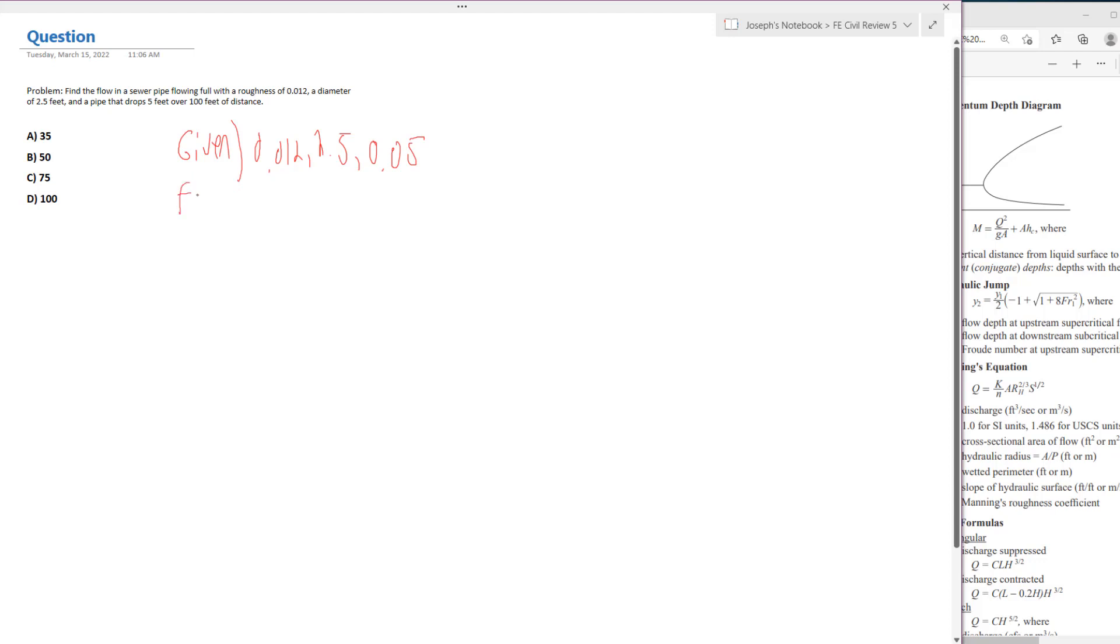Now what we need to find is the flow in the pipe. So that's going to be Q, and we don't know that. So we're going to use Manning's equation here.